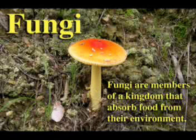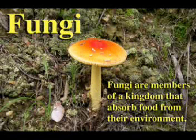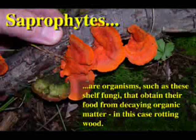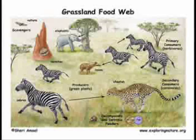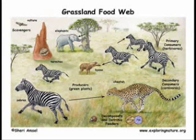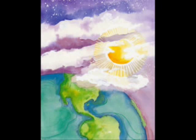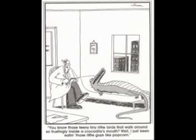Decomposers are very important. Decomposers eat dead organic matter or detritus from plants or animal sources. Decomposers are probably the most diverse group of organisms in the entire food web.